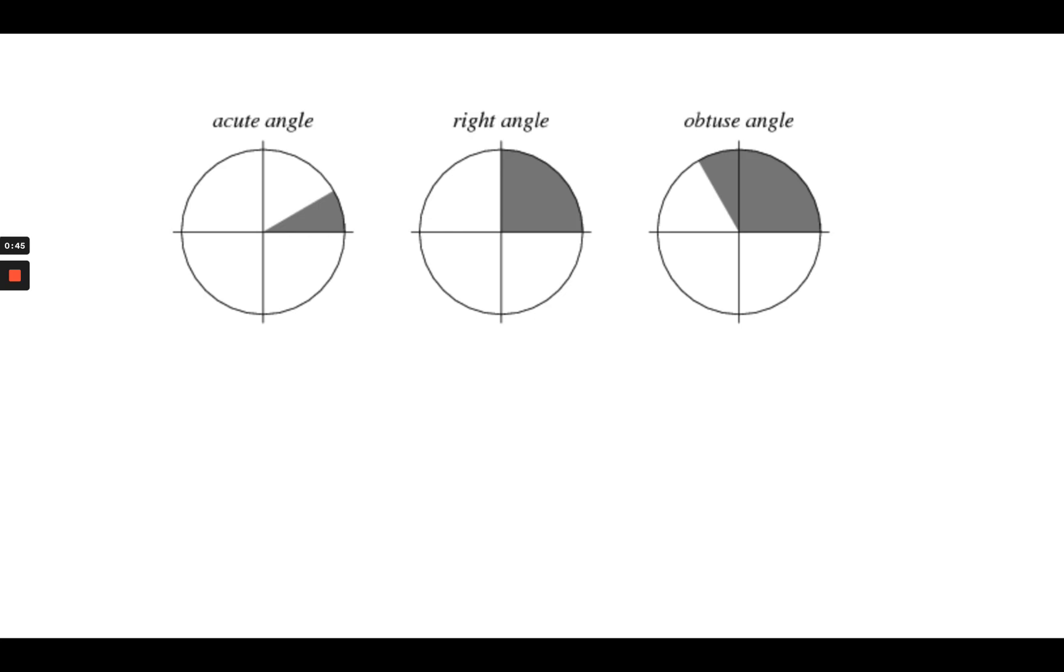So let's take a look at another way to look at these angles within a circle. So this is an acute angle within a circle, a right angle, and an obtuse angle within a circle. If we completely fill that circle, it is called a full angle.